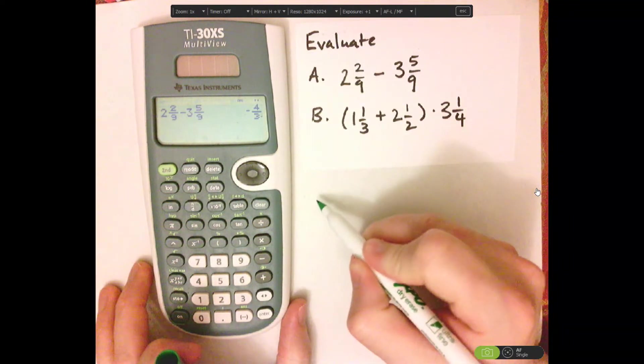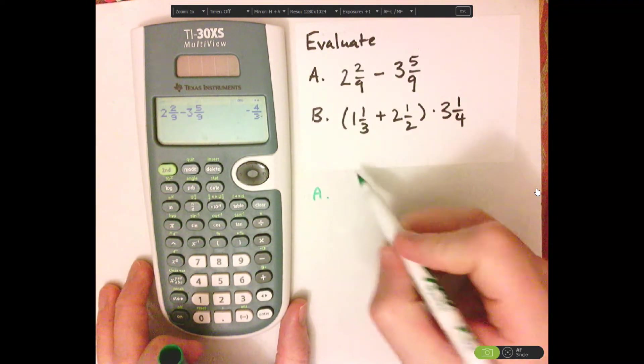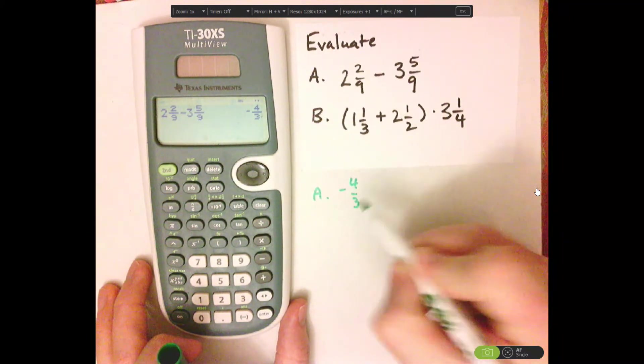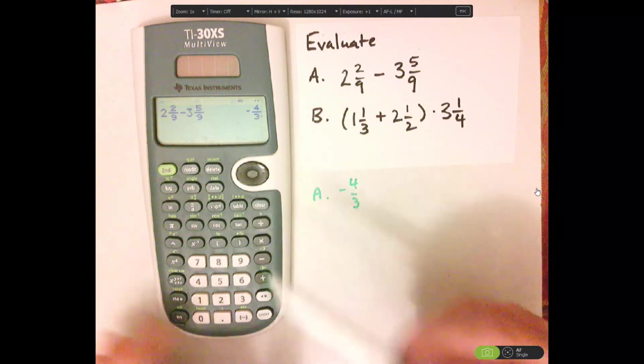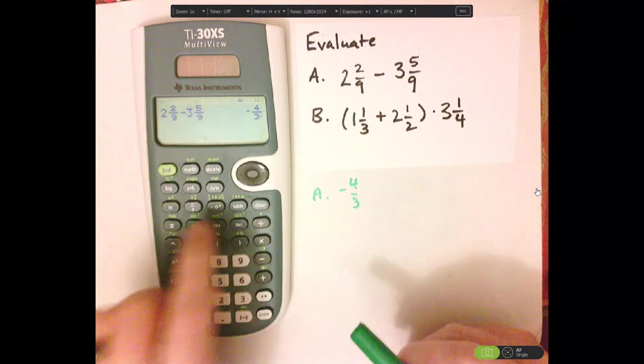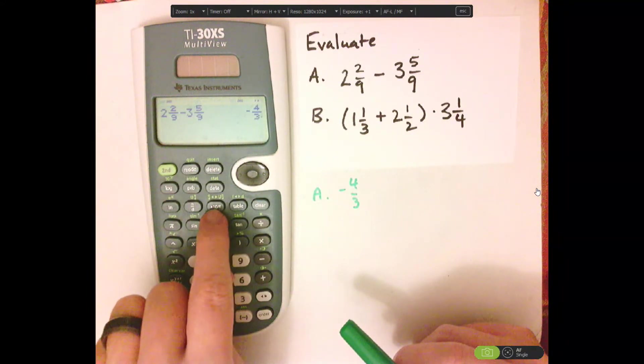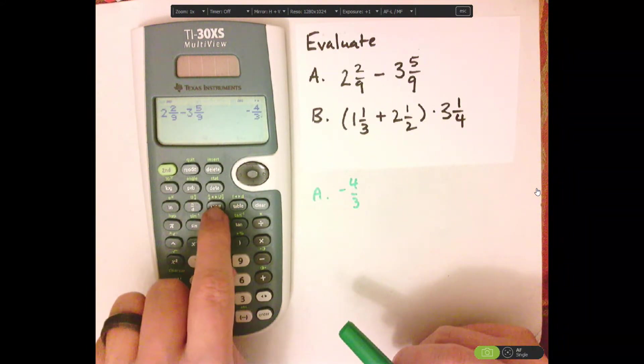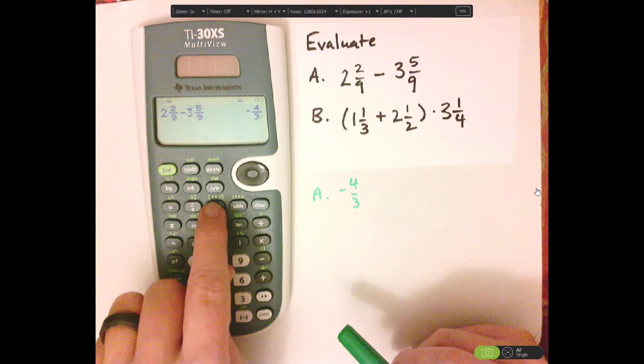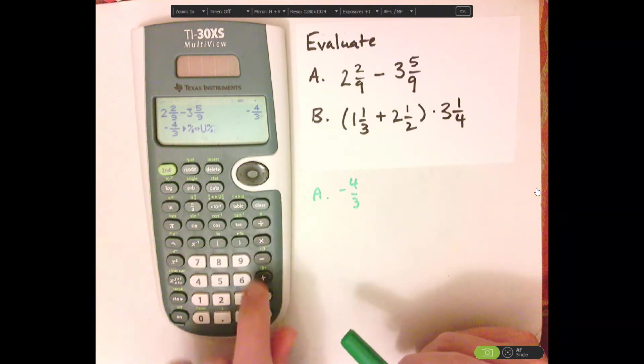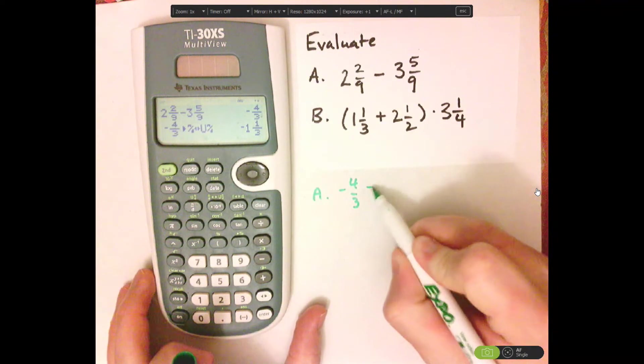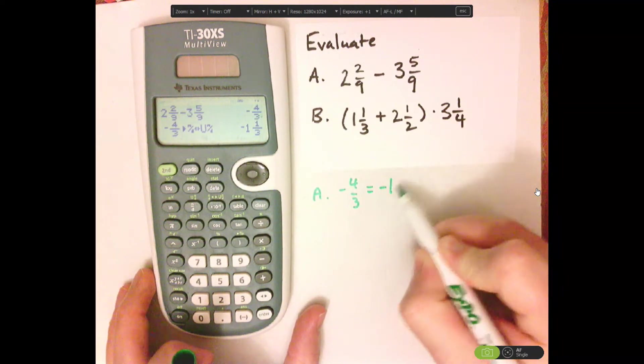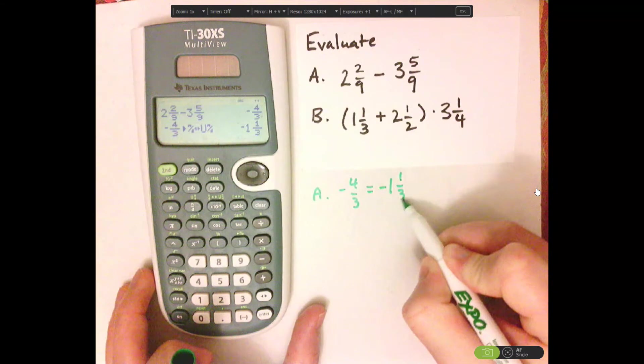So letter A is negative four thirds. Notice it didn't put it as a mixed number, so I'm going to have to convert it using this key right here. So second, and then 10N, or 10 raised to the N. That right there is going to convert it to a mixed number. So negative one and a third.